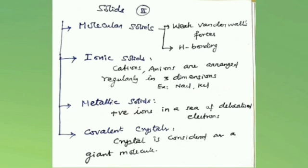The last type is covalent crystals. The entire crystal is considered a giant molecule — a three-dimensional network of atoms bonded covalently. These solids are very hard with extremely high melting points. They do not conduct electricity. Examples include graphite, diamond, silicon carbide, silicon dioxide, etc.